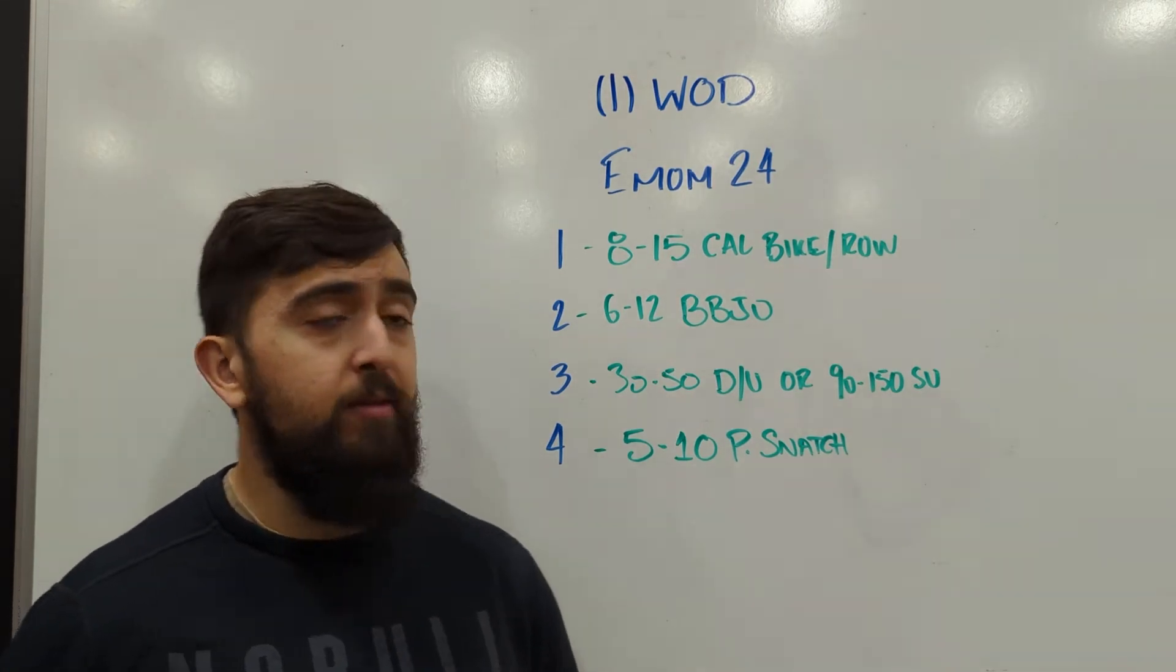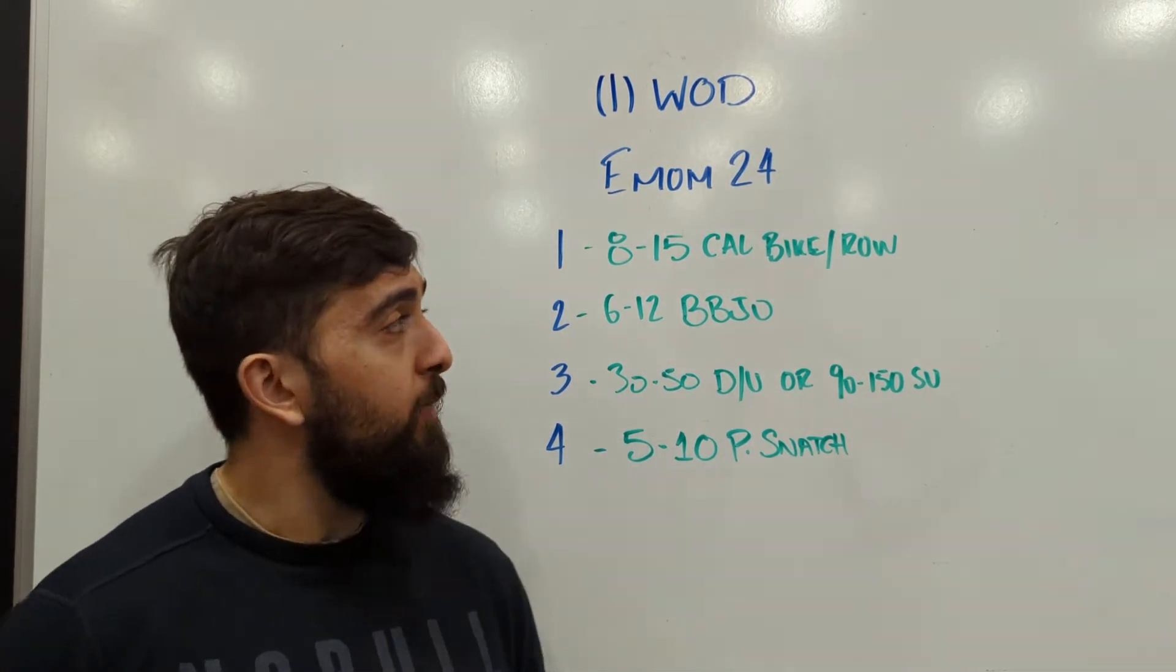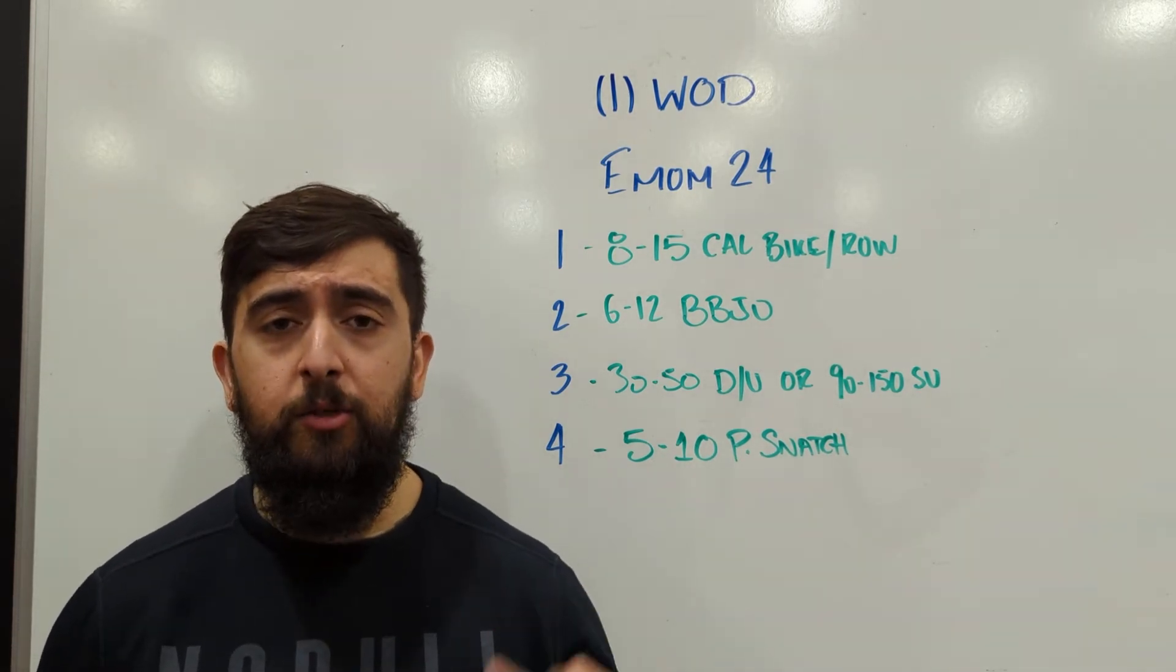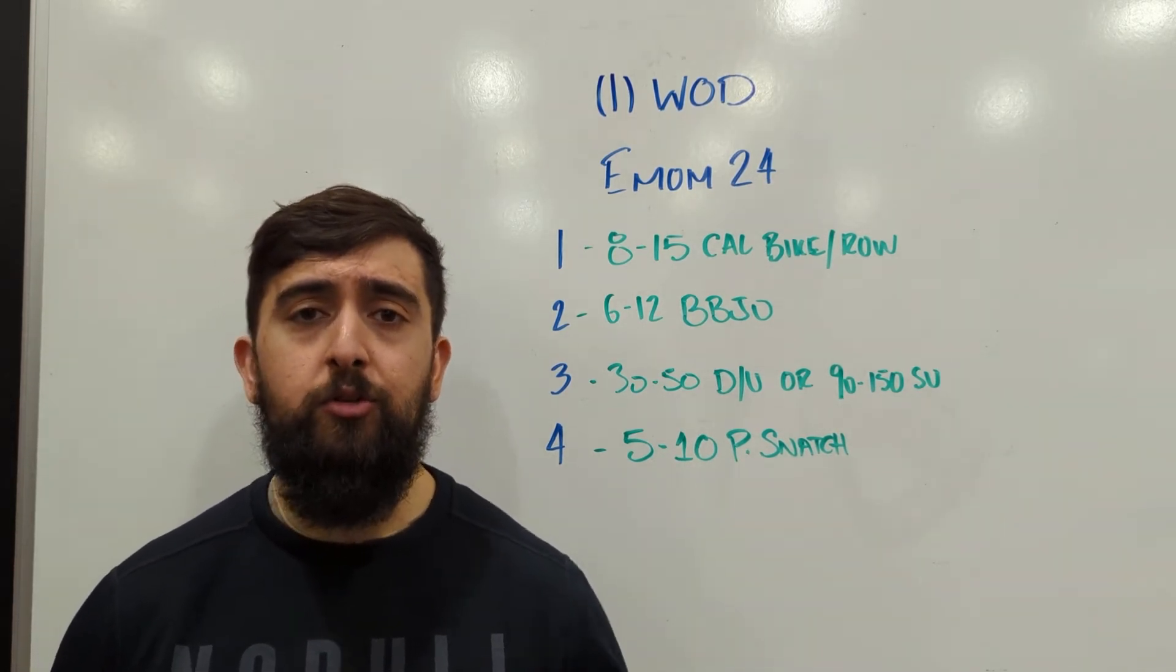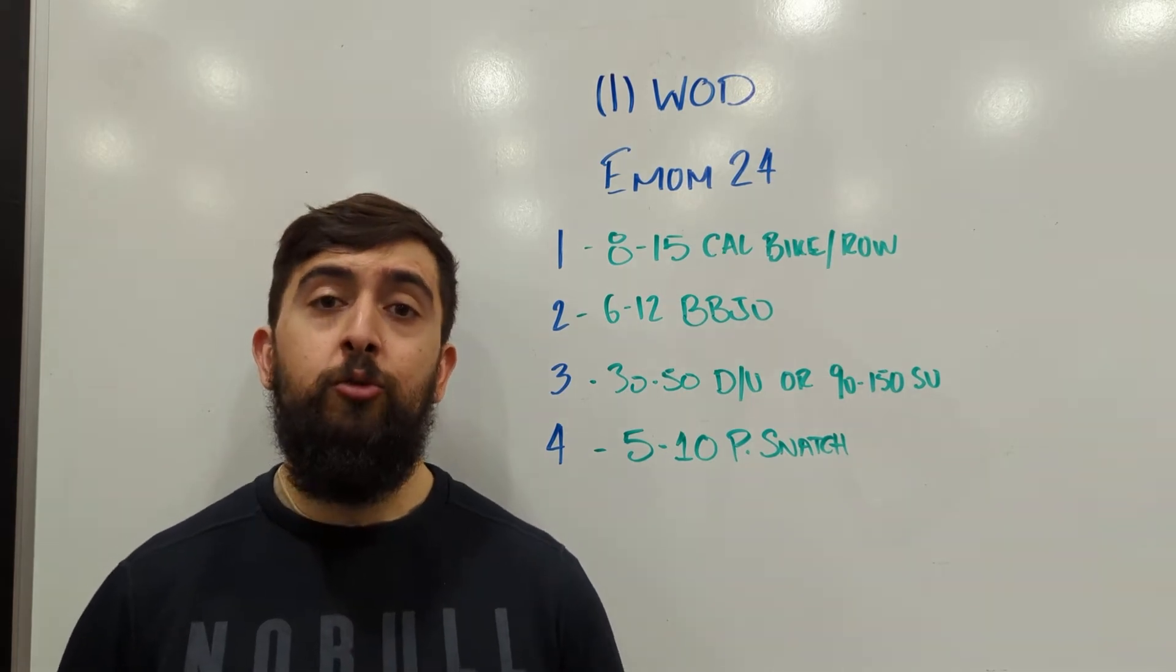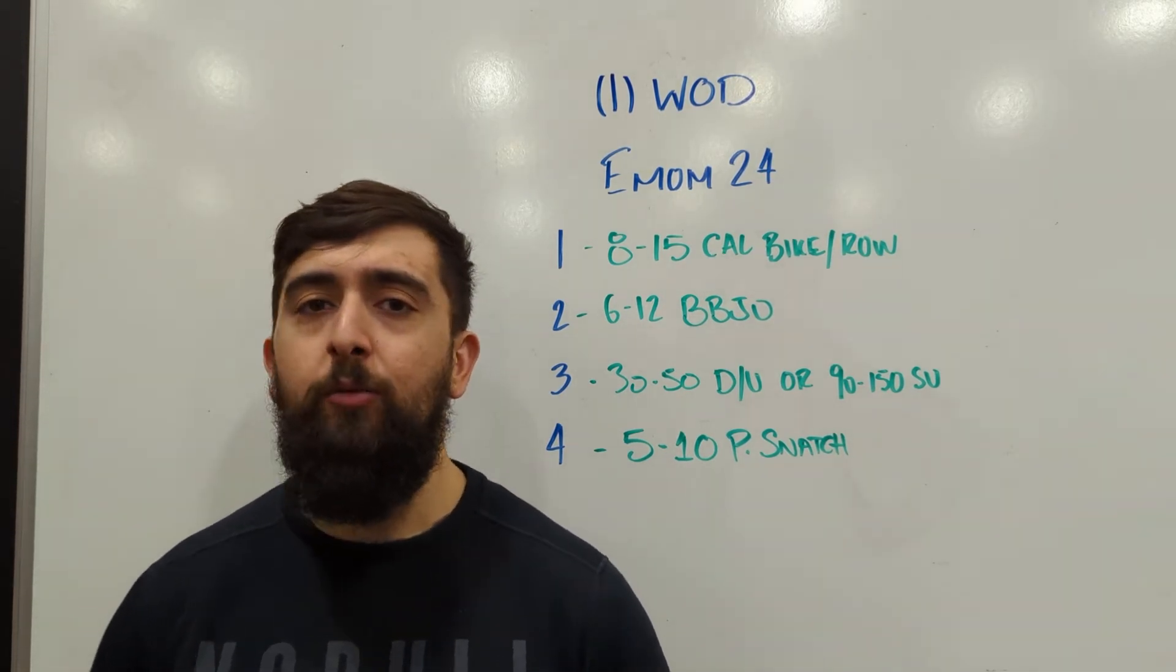First minute we're going to do 8 to 15 calories on the bike or the rower. So we've already done this one, a similar style of workout about two weeks ago. If you remember what kind of calorie range you were going, choose that today or maybe add one rep to that.